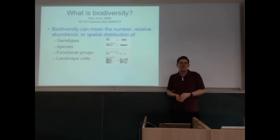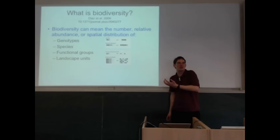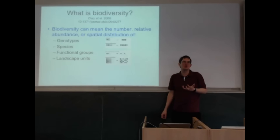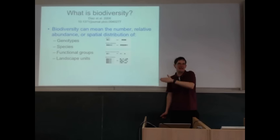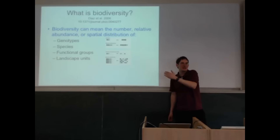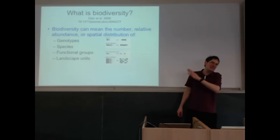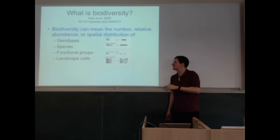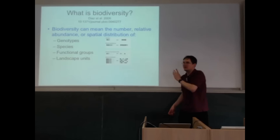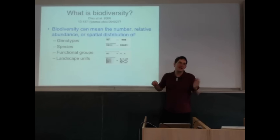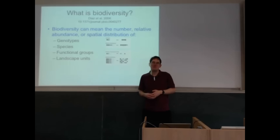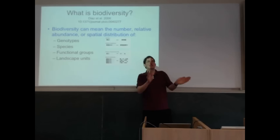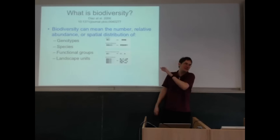Functional groups: birds that eat insects can be thought of as being one functional group. They all roughly do the same thing — they all eat insects. There might be many species of insect-eating birds, and there are also granivorous birds — birds that eat grain — which have a different function in the ecosystem. You could argue that it doesn't matter how many species of insect-eating birds you have; what matters is you have some insect-eating birds in reasonable abundance so they can deal with that part of the ecosystem. Landscape units: the idea of an ecosystem of a region — mangrove forests, the boreal forest, Saharan deserts as distinct landscape units. You've got a diversity of landscape units across the planet, and that's a component of biodiversity as well.